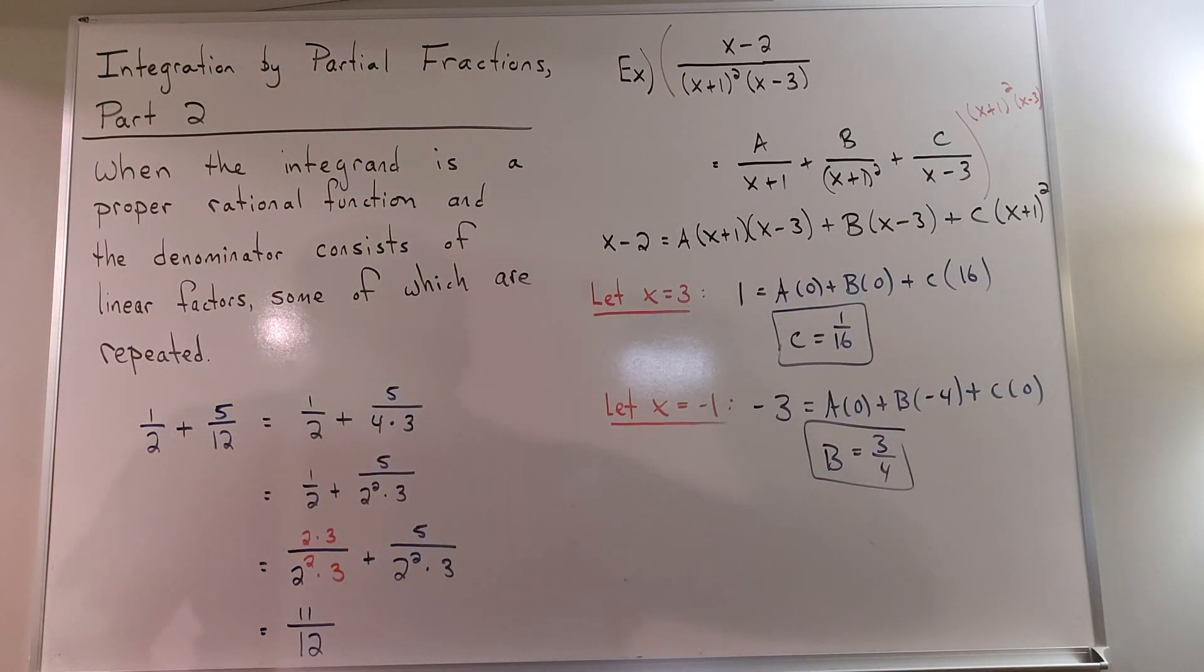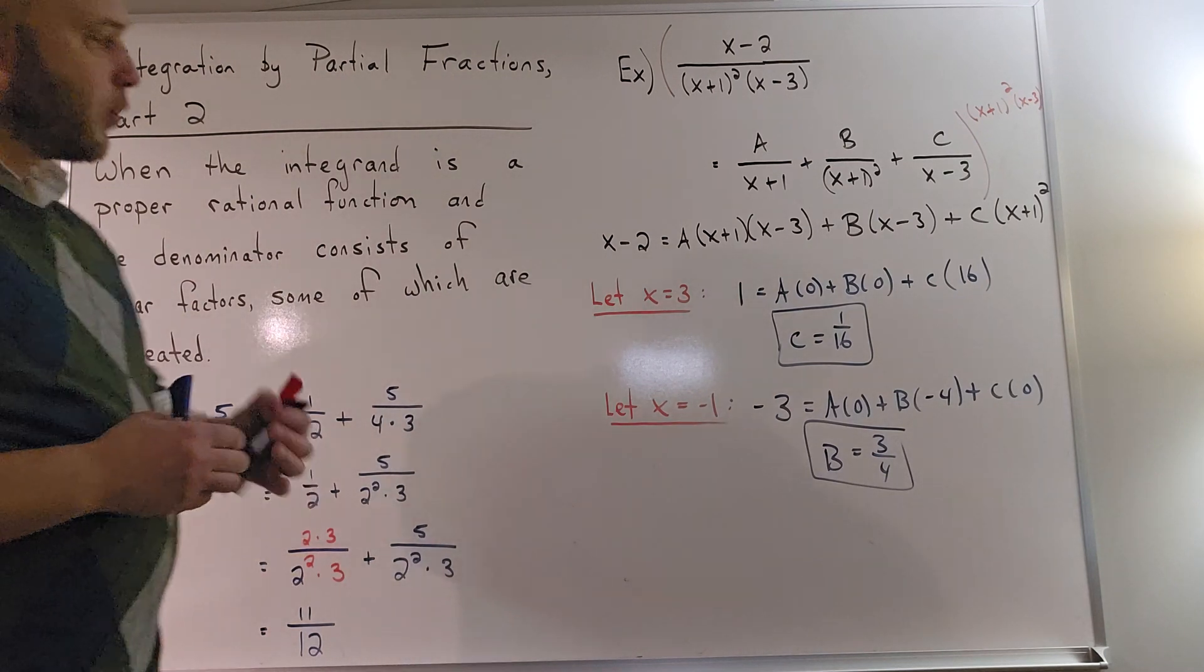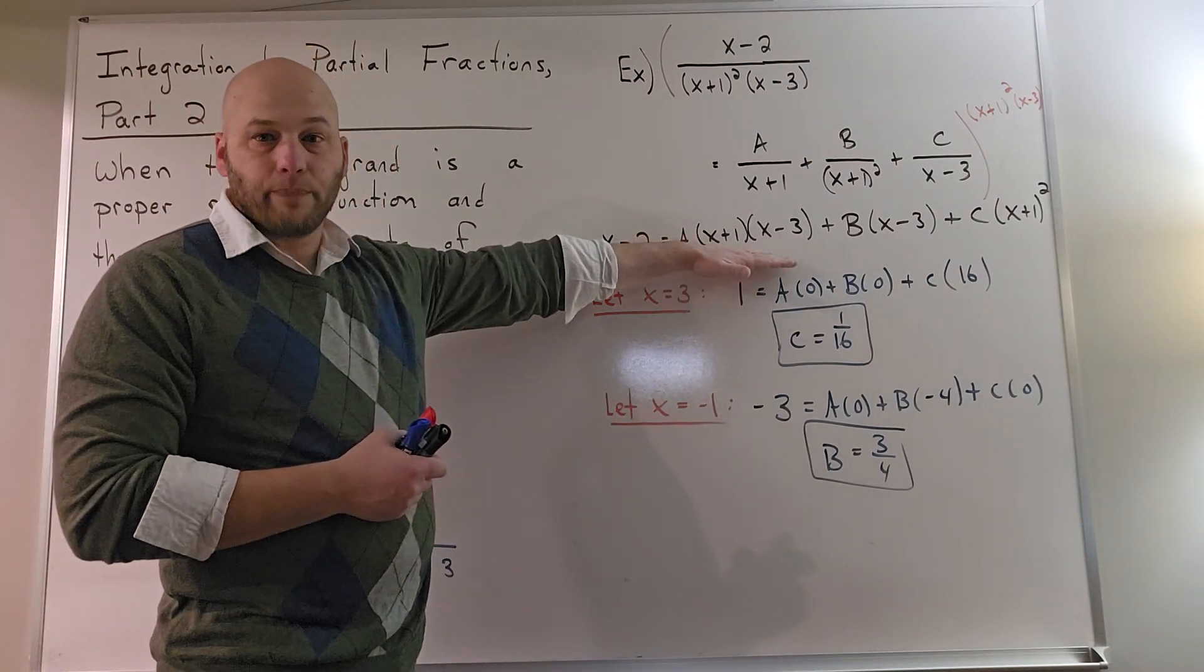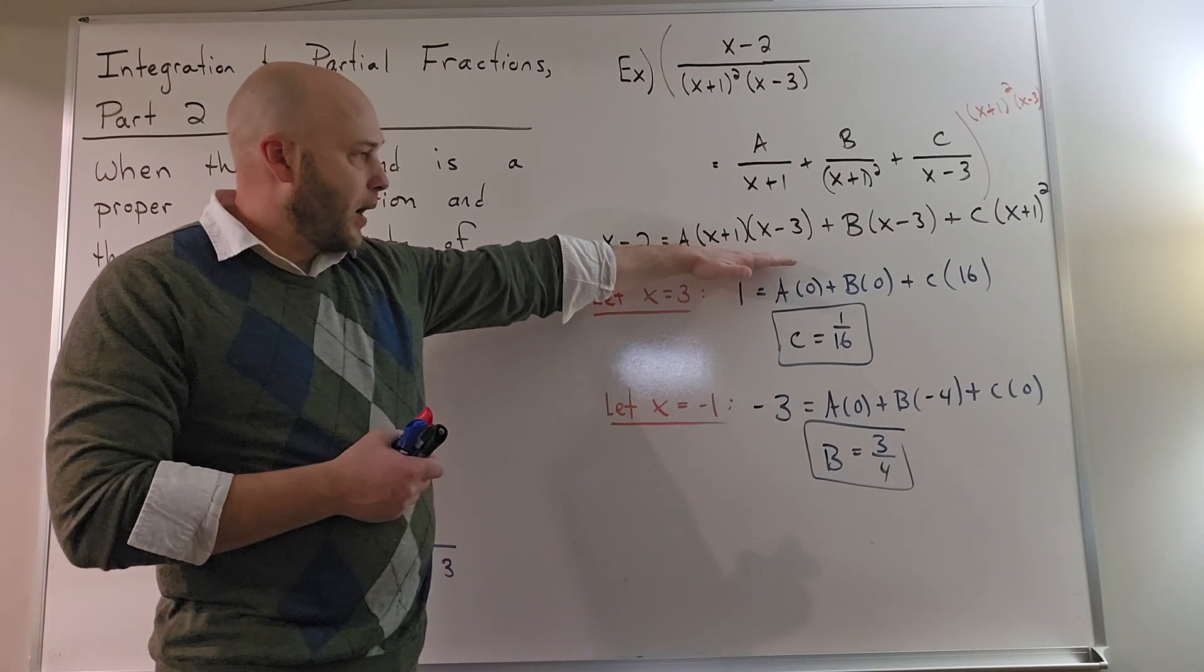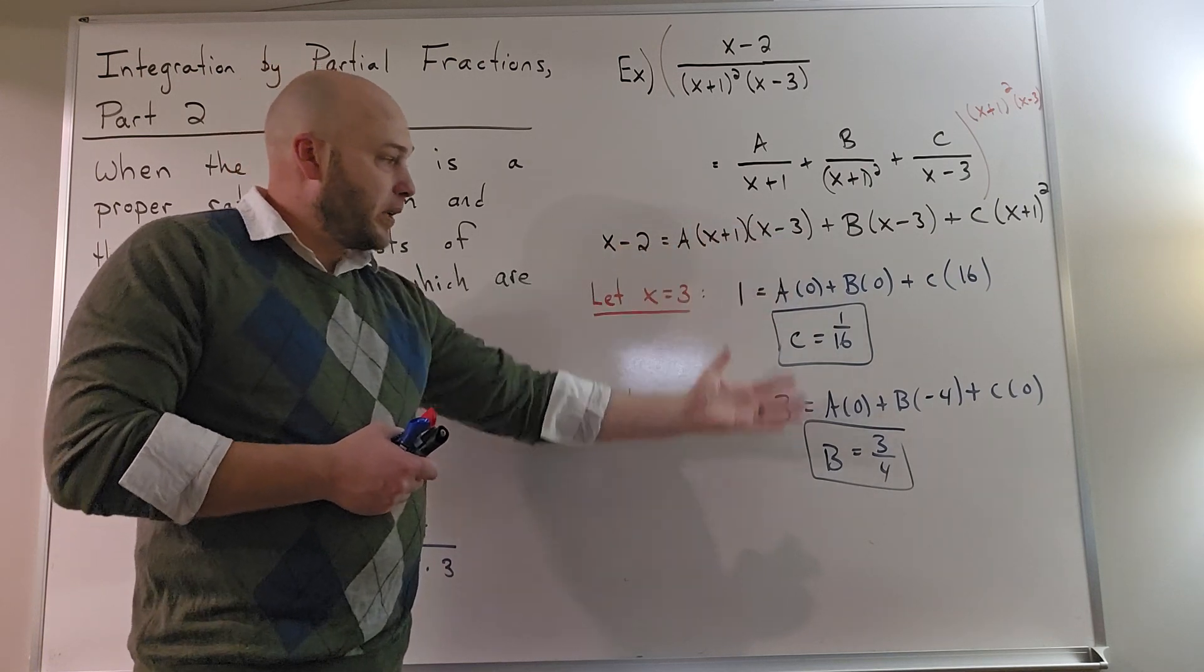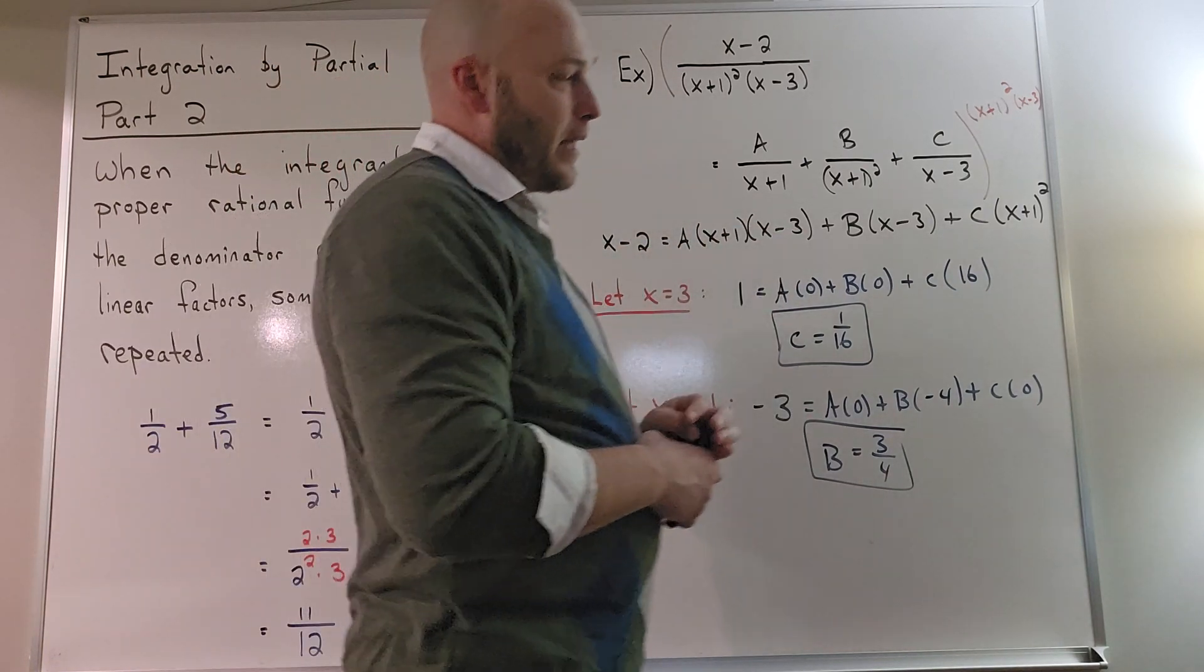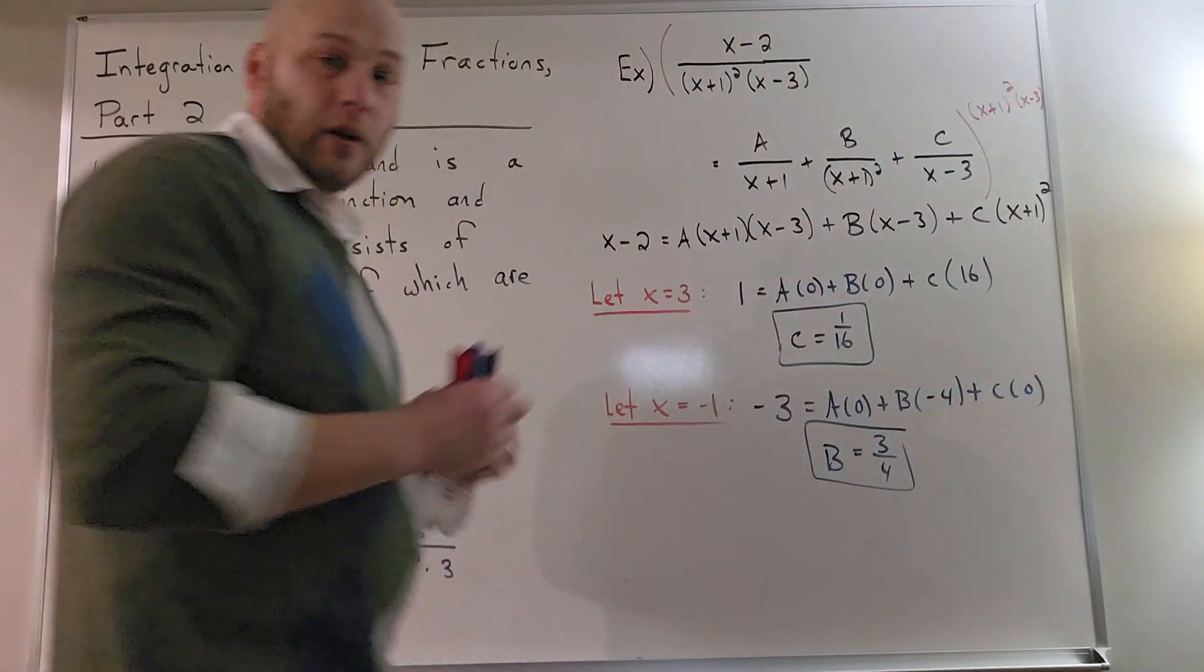Notice that my convenient values for x both eliminate the a term. I'm able to generate b and c using those convenient values, but not the a value. Here's what I'm going to do.